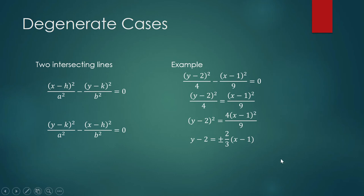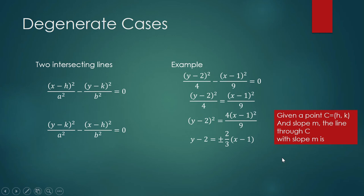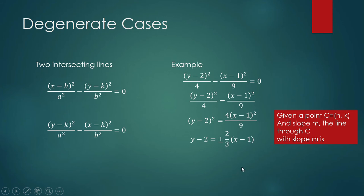These equations are actually equations of lines written in point-slope form. These two lines pass through an intersection point with coordinates (1, 2). One line has the slope of 2/3, and the other has the slope of negative 2/3. Using the point-slope form for the equation of a line, the slopes are 2/3 and negative 2/3, and the point is (h, k), where h is 1 and k is 2.